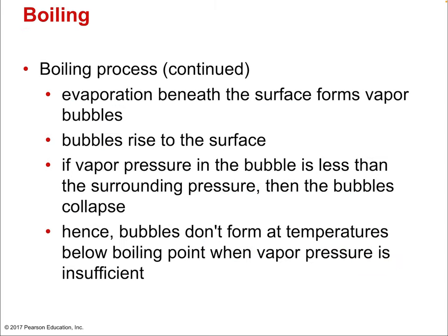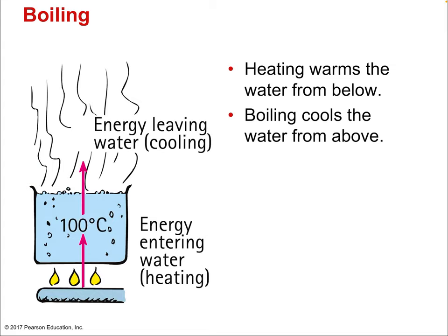In the boiling process, evaporation beneath the surface forms vapor bubbles that rise. If vapor pressure in the bubbles is less than surrounding pressure, they collapse — that's when it seems about to boil but isn't yet. Boiling has a very specific temperature at sea level: 100°C. Heating warms the water from below; boiling cools the water from above — boiling is a cooling process. If you turn off the flame, boiling quickly stops because it's so effective at cooling. The water then continues cooling through radiation and conduction into the pot.